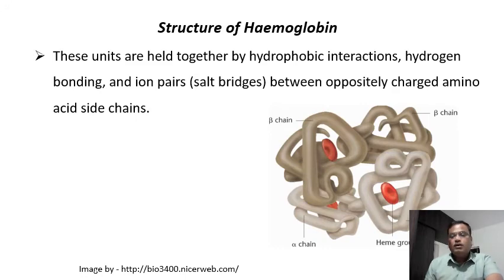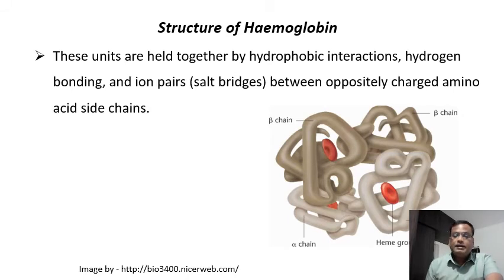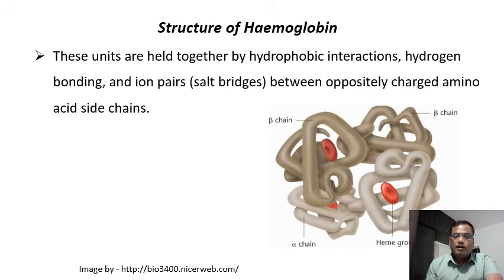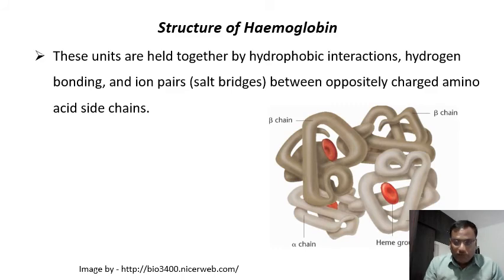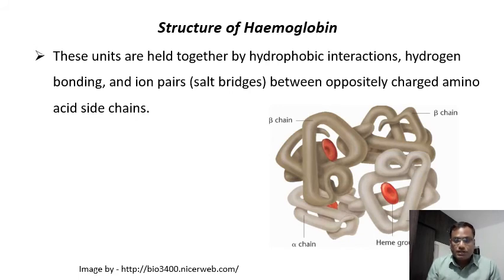Protein molecules mainly depend on their structure for their function. The amino acid sequence is the primary structure; the interactions between amino acids lead to the formation of alpha helix and beta sheets, which represent the secondary structure; the folding of the polypeptide due to interactions among amino acids results in a three-dimensional tertiary structure. In many proteins the tertiary structure is the functional structure, but in some complex molecules like hemoglobin, more than two polypeptides are involved in creating a quaternary structure, which is functional.